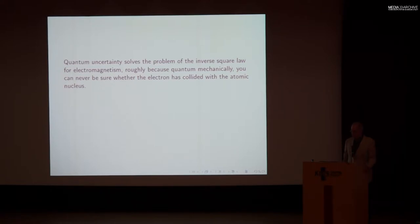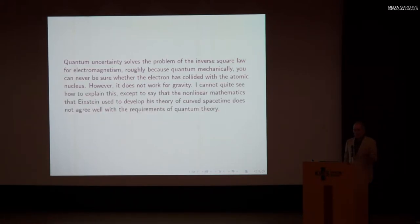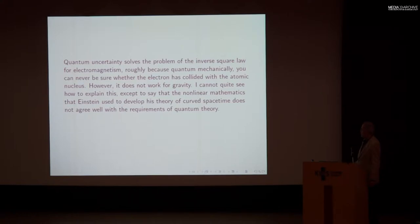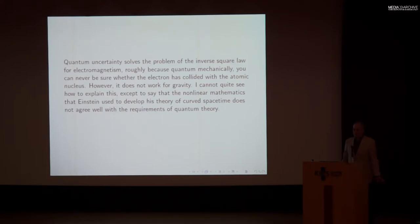Quantum uncertainty solved the problem of the inverse square law for electromagnetism — roughly because, quantum mechanically, you can never be sure whether the electron really did collide with the atomic nucleus. But it doesn't work for gravity. Unfortunately, it's hard to explain why it works for electricity and not for gravity. The best I can say is that the non-linear mathematics that Einstein used in his theory of curved space-time does not agree well with the requirements of quantum theory.